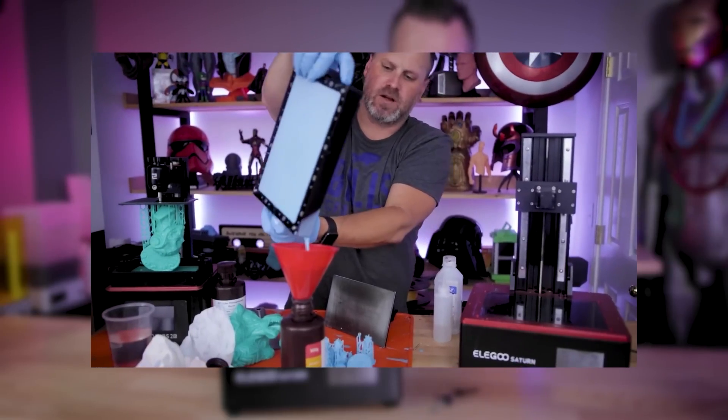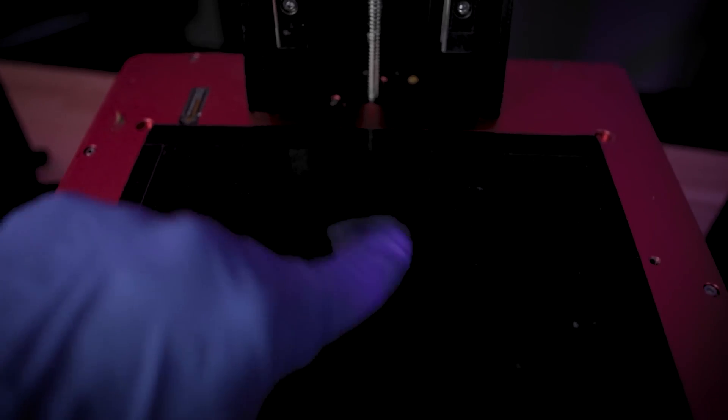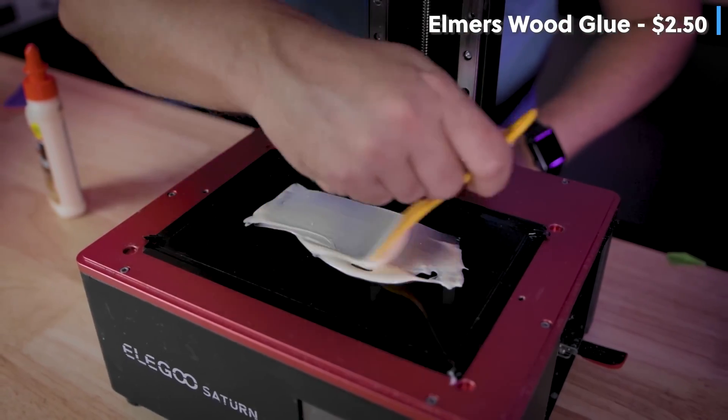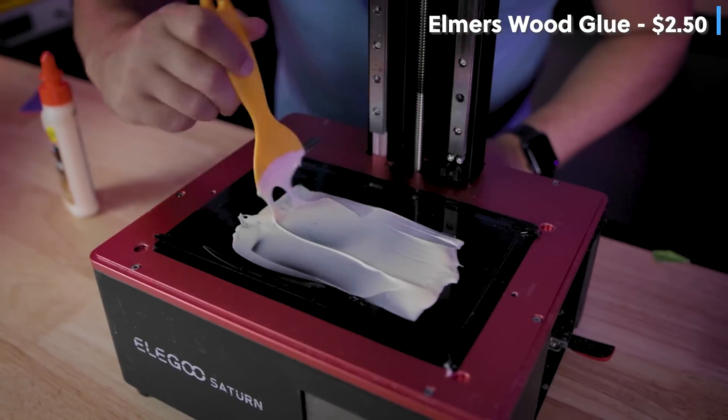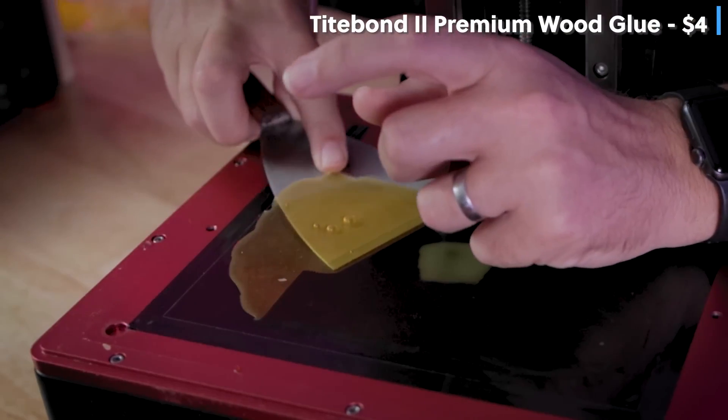Sometimes you can miss a drip or two when emptying your resin vat, which can leave these hardened blobs of resin behind. The idea is that you spread out a thin layer of wood glue across your screen, covering the spots of cured resin. You let that dry and then peel it up afterwards.